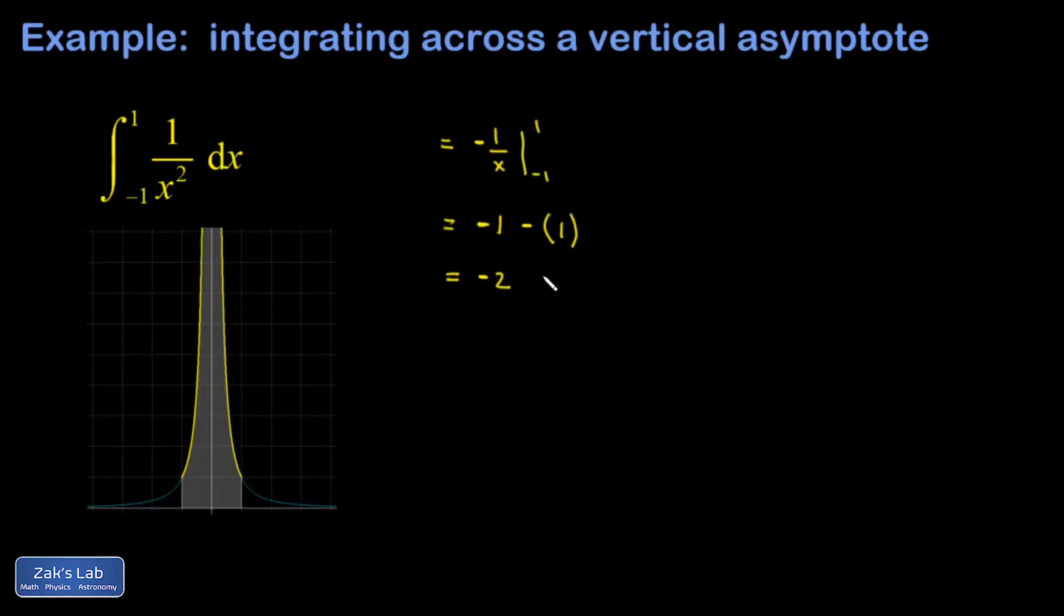This is clearly impossible because my function is above the x-axis. I know I've got positive signed area here, so something has gone wrong. The issue is that we're hiding an infinity in this. When x equals 0, this thing blows up to infinity. I need to carefully split my integral at that problematic point and compute the integral on the left and right side separately.